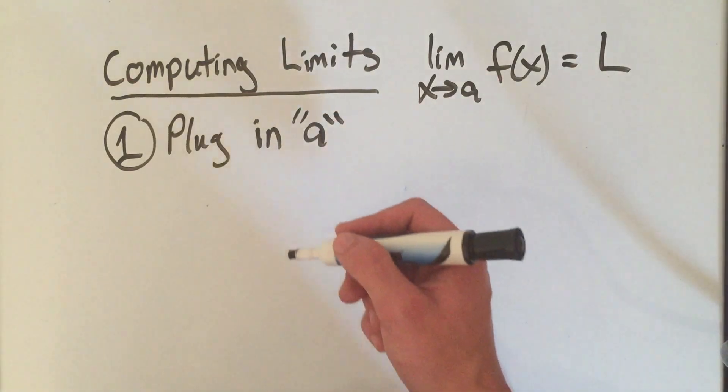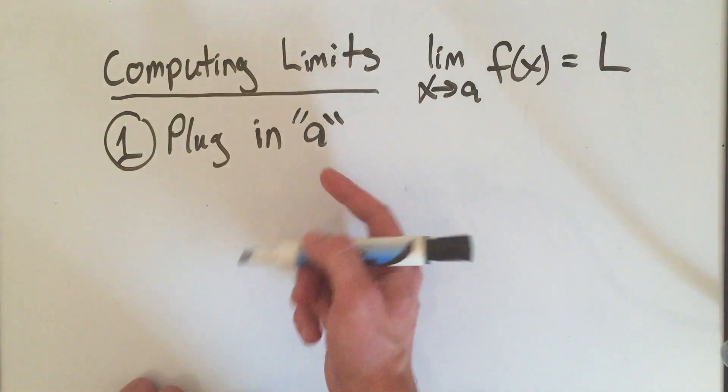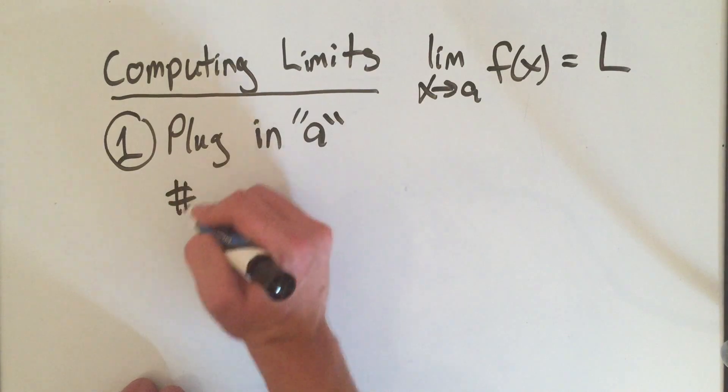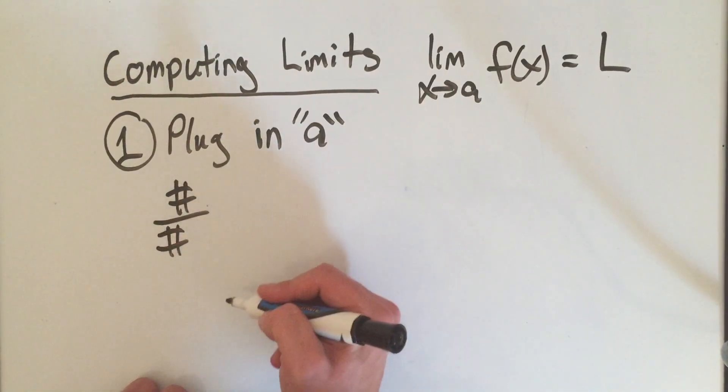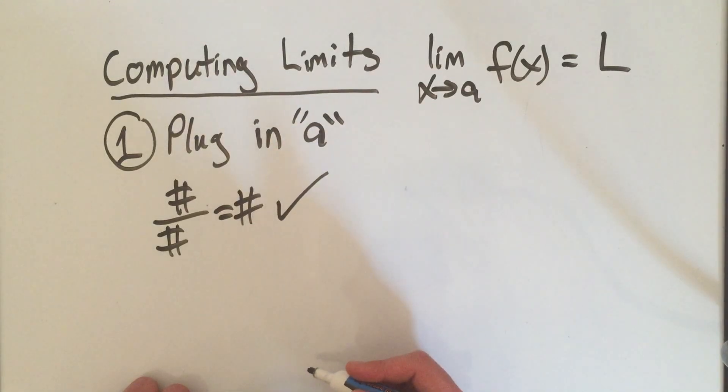When you plug in A, there's only so many things that can happen. If I plug a number into this function, I could get a number over a number, which is a number, and then you would be done. That would be your answer.